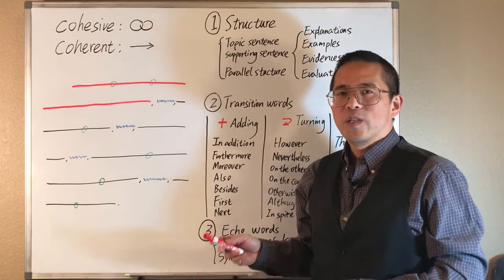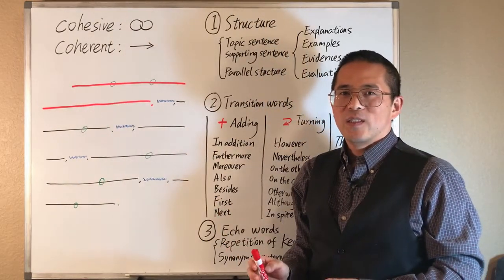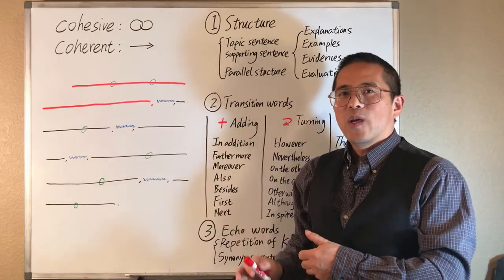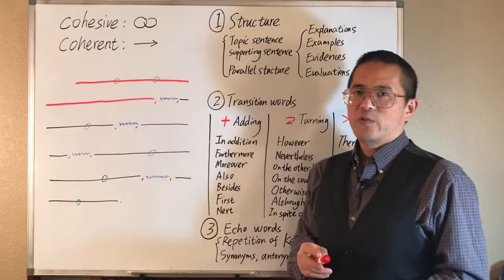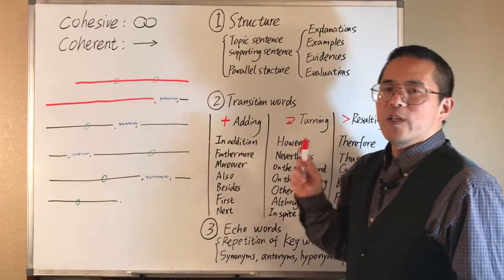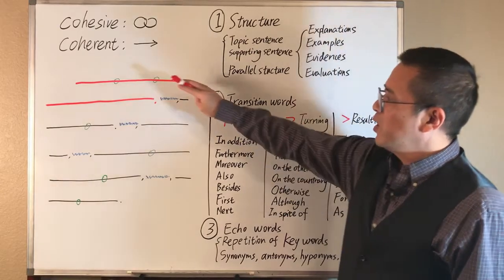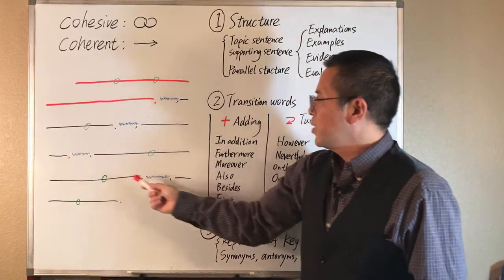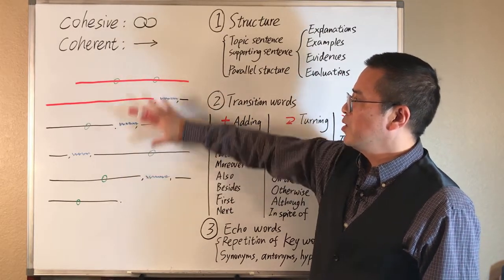Some writers may also want to put an introduction or a transition sentence before the topic sentence. But again, a good practice is to always consider putting the topic sentence first, unless we have a very good reason not to do so. After we establish the basic structure that includes the topic sentence and the supporting sentences, we may improve the cohesion and coherence of the paragraph by using transition words to link these sentences. The blue lines here represent the transition words used to provide linkage between the ideas expressed in these sentences.